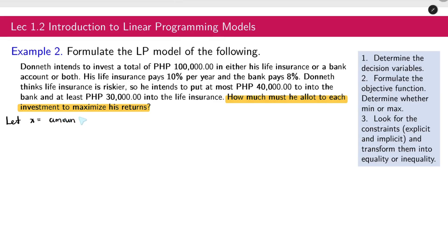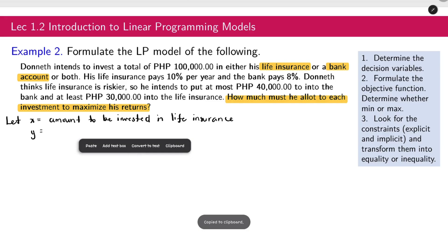From the previous example, you already have a hint how to create the decision variable. Let x be the amount to be invested in life insurance. There are two choices: life insurance and bank account. So x is the amount to be invested in life insurance. And y, let me just copy this. For y, we have bank account. These are our decision variables.